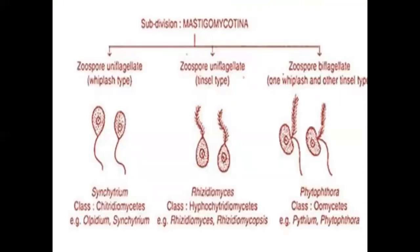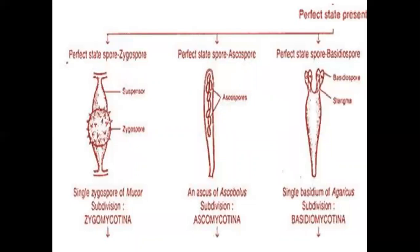Subdivision Mastigomycotina is characterized by zoospores. Uniflagellate whiplash-type zoospores belong to Synchytrium. Uniflagellate tinsel-type zoospores belong to Rhizomycelium. Biflagellate zoospores with one whiplash and one tinsel type belong to Phytophthora and Pythium. Where motile cells are absent, the perfect state spores are zygospores — the single zygospore type is seen in Mucor, belonging to subdivision Zygomycotina.